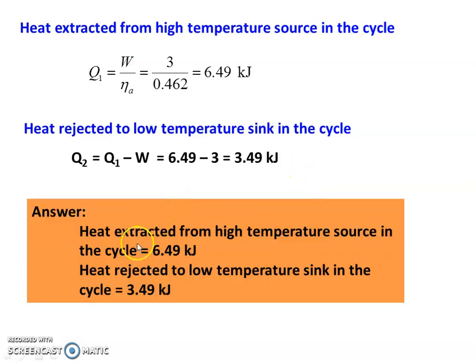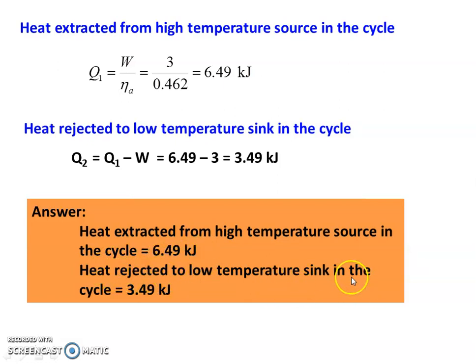The answers to the problem: heat extracted from the high temperature source equals 6.49 kilojoules, and heat rejected to the low temperature sink equals 3.49 kilojoules.